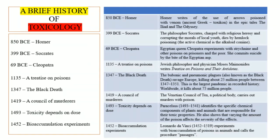Next, 69 BCE: Cleopatra, the Egyptian queen, used strychnine, which is a chemical poison. She experimented with poisons on prisoners and poor people to observe the effects. She ultimately died from the bite of an Egyptian asp, which is a venomous snake found in Egypt.